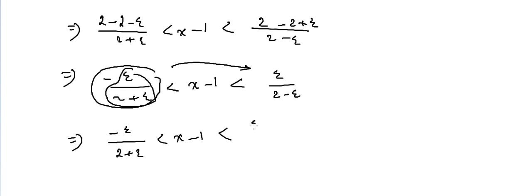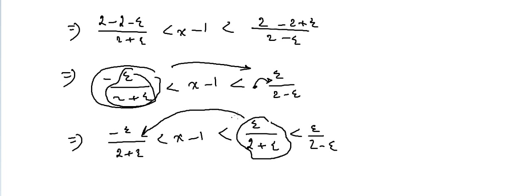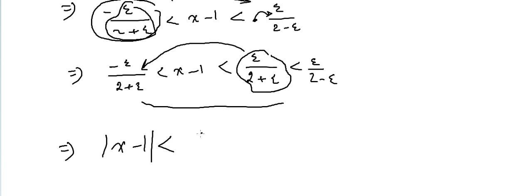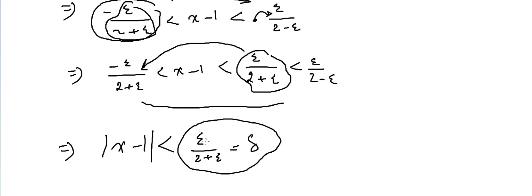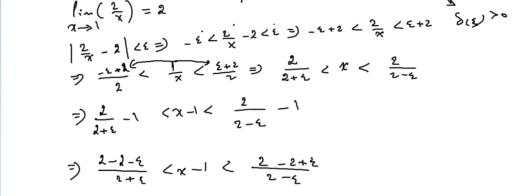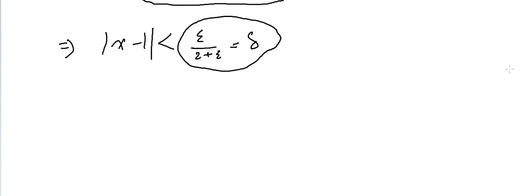So we have minus epsilon over (2 plus epsilon) less than X minus 1 less than epsilon over (2 plus epsilon), which is less than epsilon over (2 minus epsilon). To ensure the least Delta, we can take the absolute value of X minus 1 and make it less than epsilon over (2 plus epsilon). So Delta equals epsilon over (2 plus epsilon), which is positive since epsilon is a small positive number. This completes the proof.